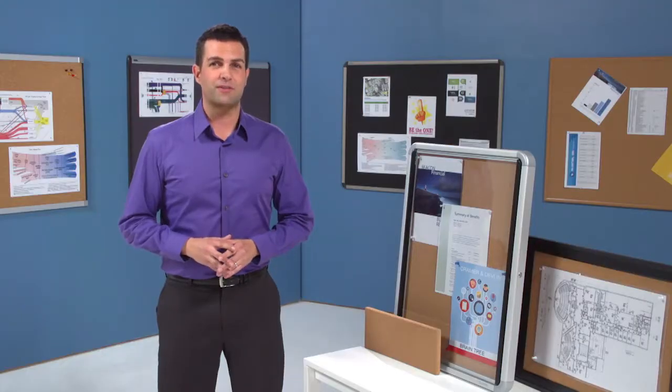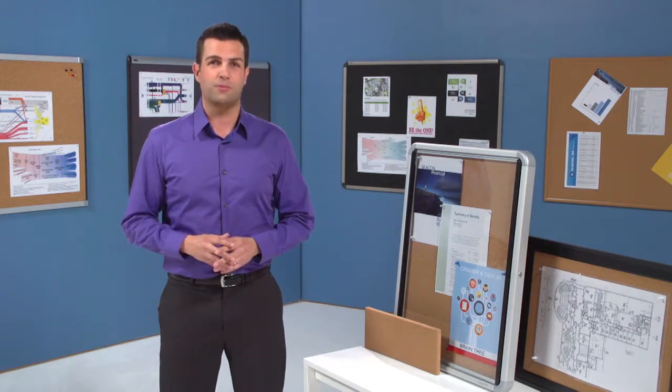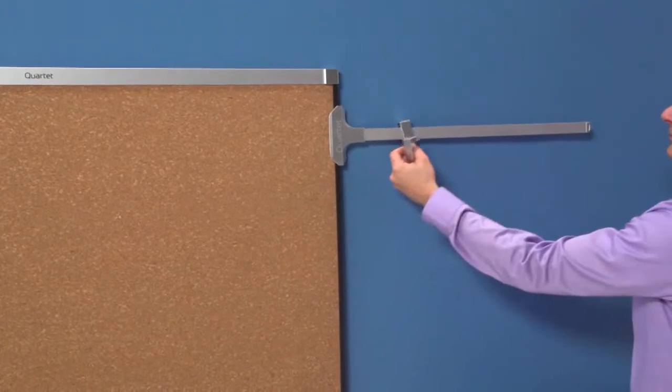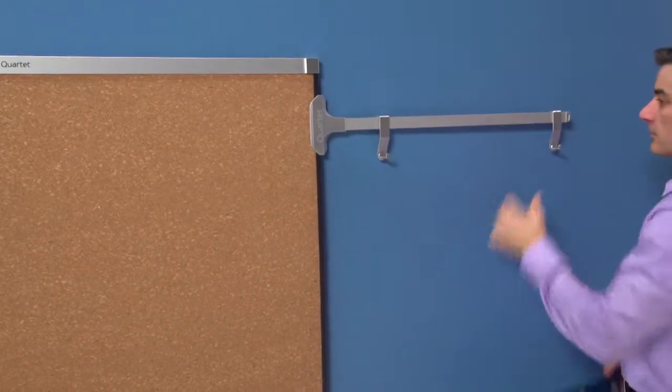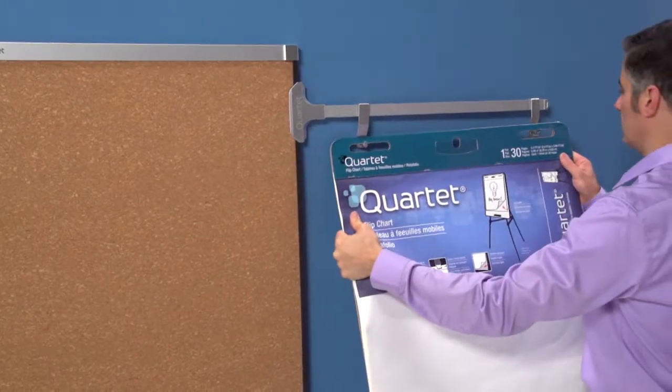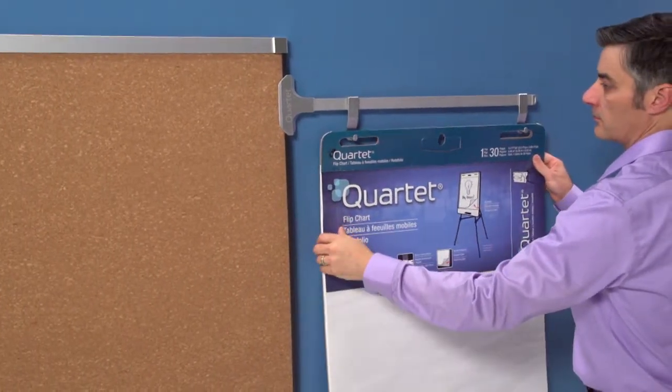These same benefits are now available in Prestige II magnetic cork bulletin boards. You can accessorize your Prestige II bulletin boards for even more professional performance, such as adding a flip chart extension arm or an accessory storage cup.